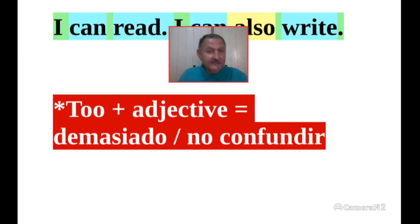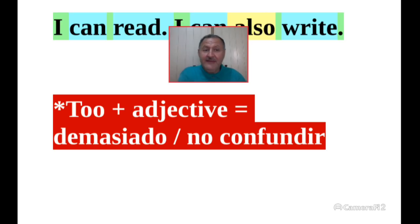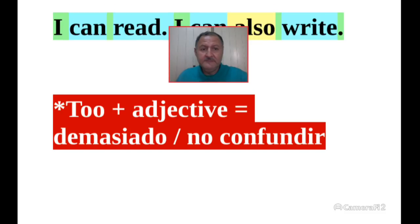Too plus adjective — I had mentioned this earlier. In this case 'too' means 'demasiado' — too much. Don't confuse it: too hot means 'demasiado caliente', too cold. When 'too' modifies an adjective it doesn't go at the end of the sentence — it means 'demasiado', not 'también'.